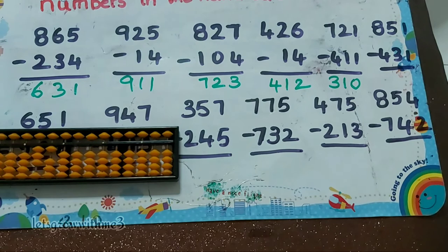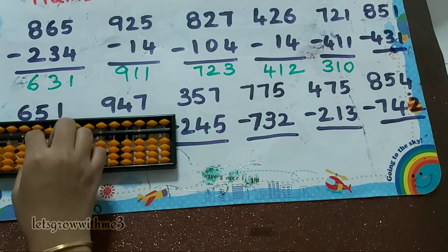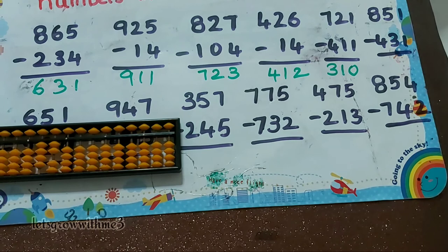Next one, 851 minus 431: minus 5, minus 4 — how to do minus 4? Minus 5 plus 1. Minus 3: minus 5 plus 2. Minus 1 — direct. So the answer is 420.